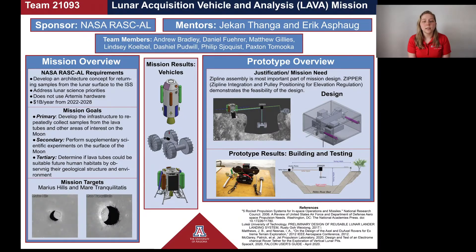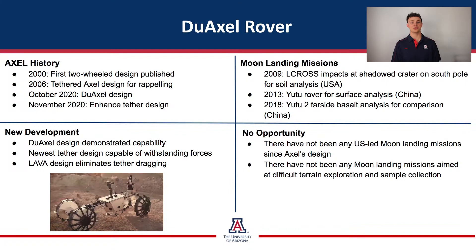In order to access these lava tubes, we decided to utilize a tethered rover and design the other two vehicles to deliver this payload. These vehicles were optimized to minimize any risks associated with this goal. We then designed a proof-of-concept prototype to demonstrate the most critical component of this mission, the zip line operation. Although the JPL dual axle rover design is ingenious, it has not been given the opportunity to be a part of a full-scale mission. We believe this rover is perfect for our mission because the risk of tearing the tether on the sharp lunar regolith has been eliminated.